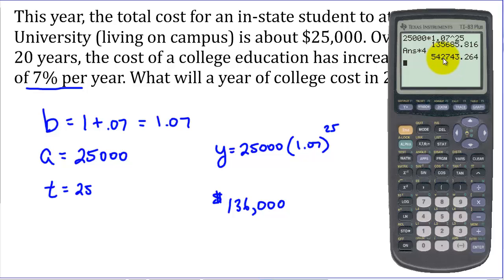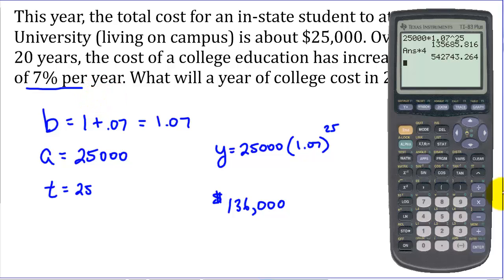Multiplying by 4 years, we're talking about a college education going from $100,000 to well over half a million dollars — more than 5 times as much. The problem is our salaries will not be increasing by that much. Every year the gap between what we earn and what education costs is growing. Something's going to have to happen; if this continues, no one will be able to afford college.